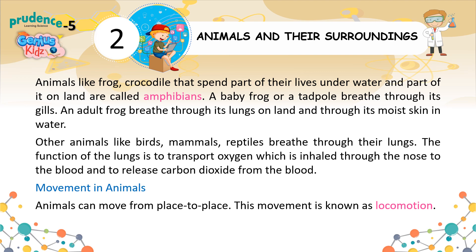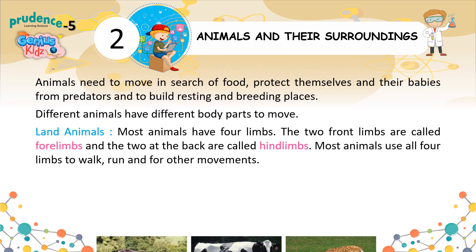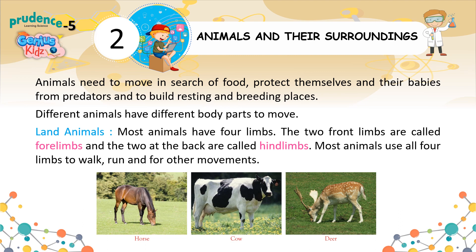The function of the lungs is to transport oxygen — inhaled through the nose — to the blood, and to release carbon dioxide from the blood. Movement in Animals. Animals can move from place to place; this movement is known as locomotion. Animals need to move in search of food, to protect themselves and their babies from predators, and to build resting and breeding places. Different animals have different body parts to move.